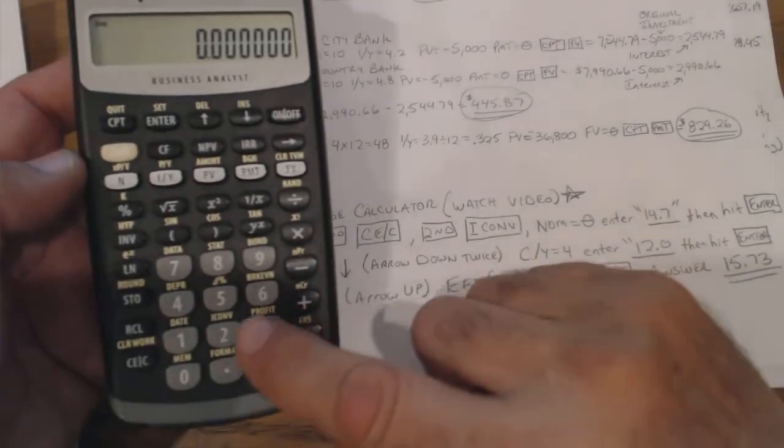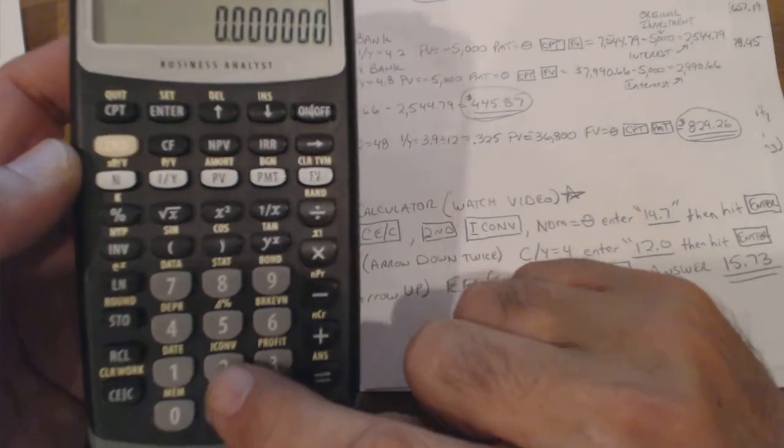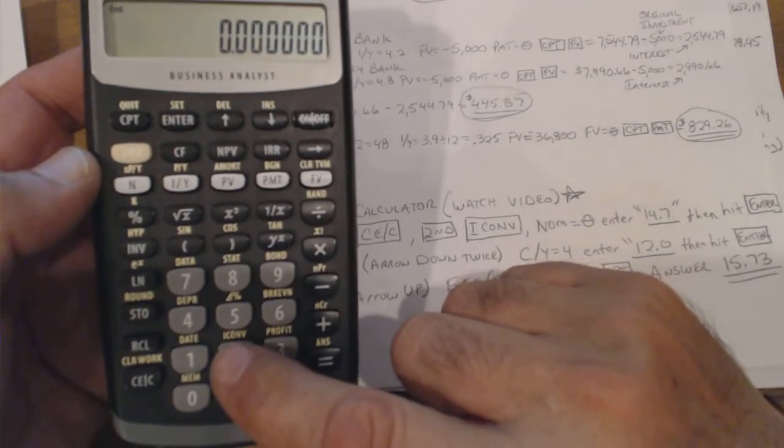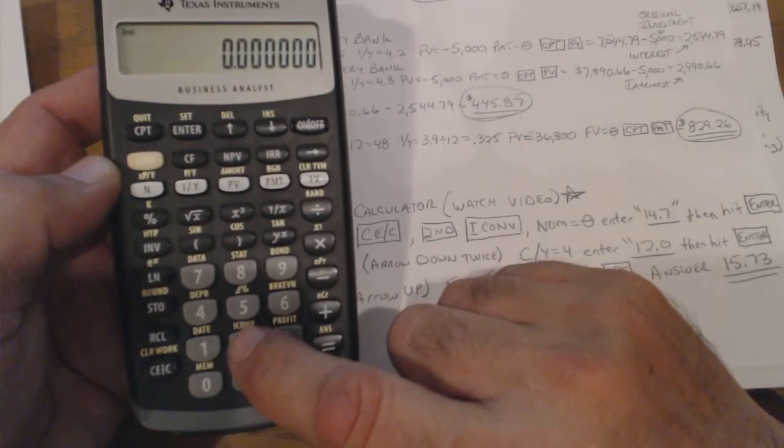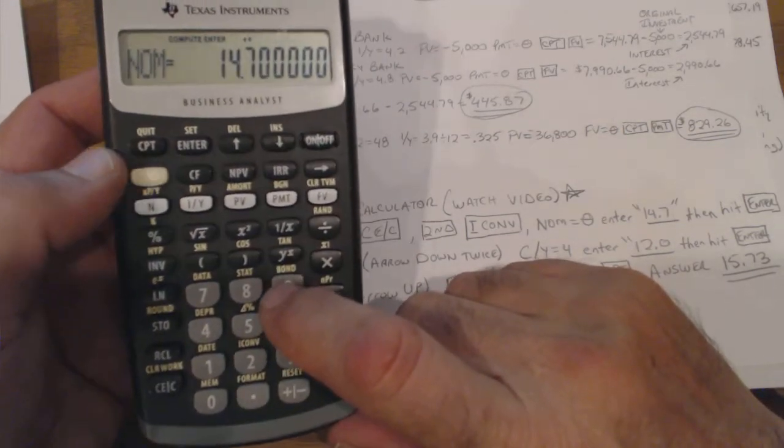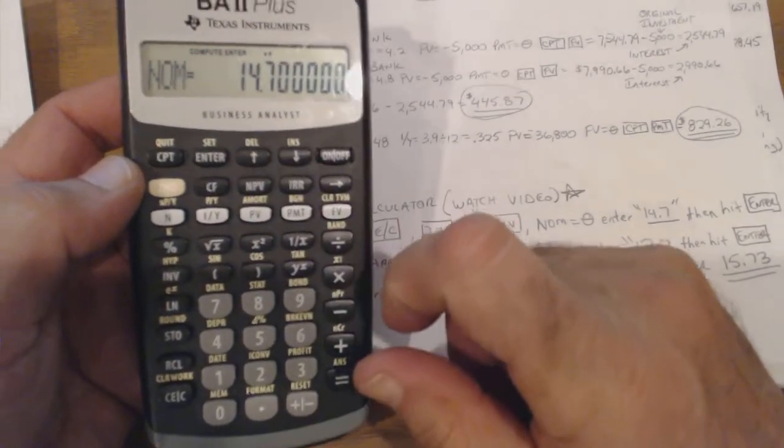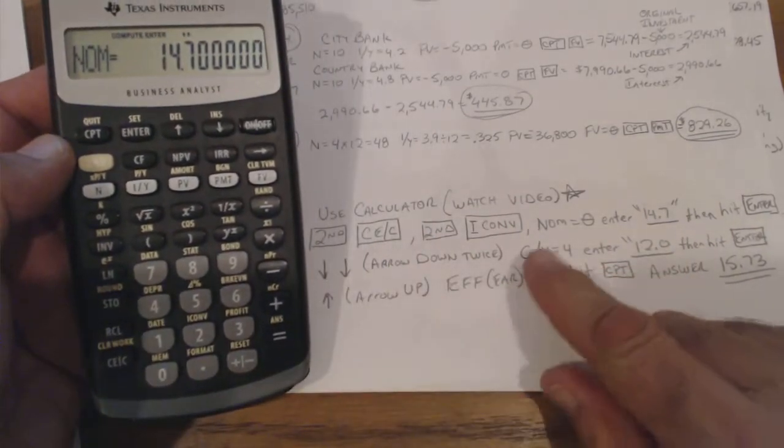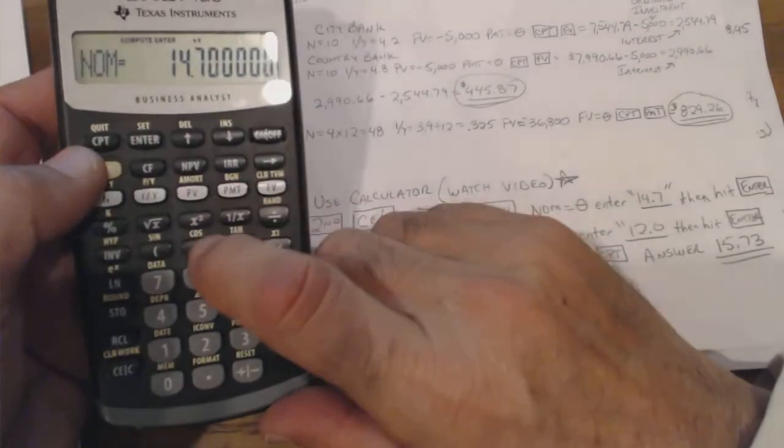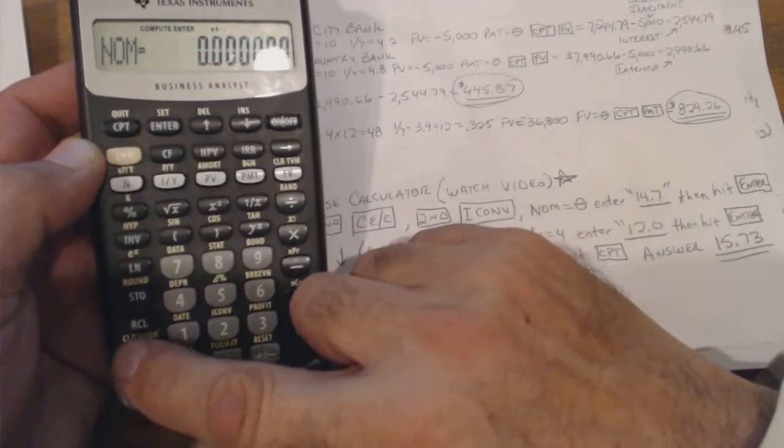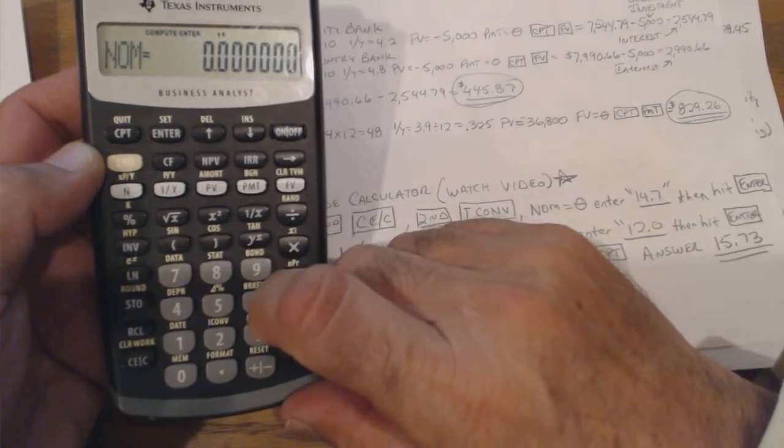We're going to use an interest conversion, I-CONV. Second, and then here you can see it right above the two, the I-CONV, interest conversion. This one, for some reason, stores these and you can't clear them. It's asking you for your nominal rate. It should say zero. There it goes. So we cleared it.